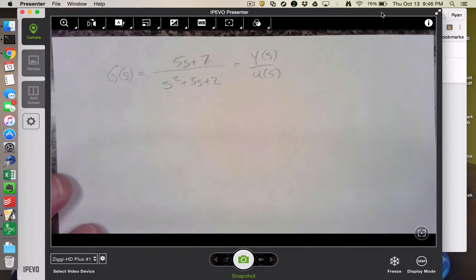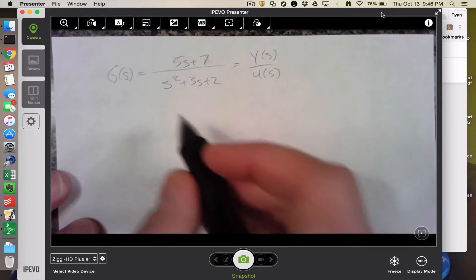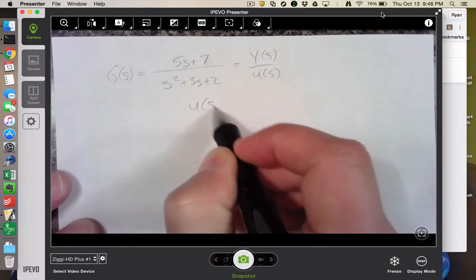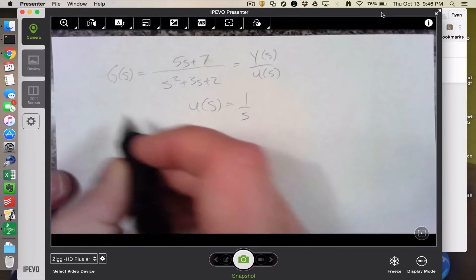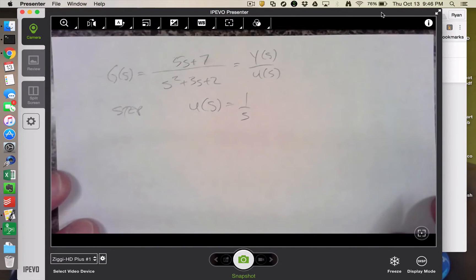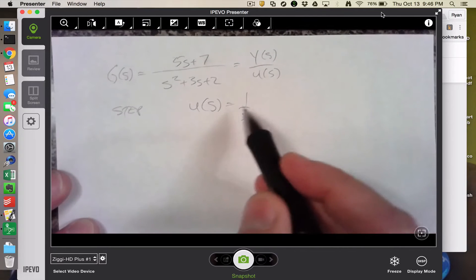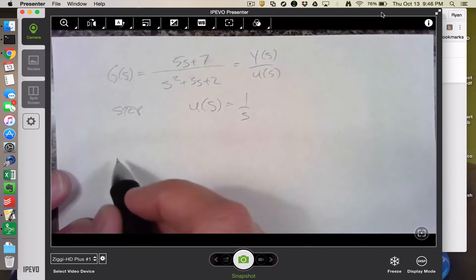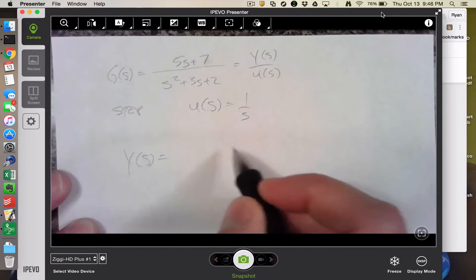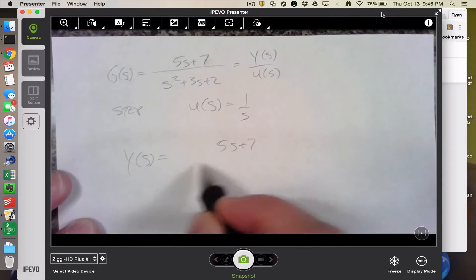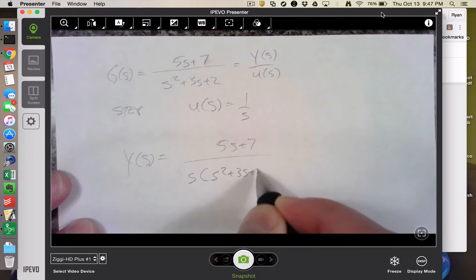My suggestion is that you kind of arbitrarily make up transfer functions and or differential equations, and then choose an input. I'm going to do a step response, so a step input to this transfer function. When I multiply that times u of s, I'm going to get that y of s is 5s plus 7 over s times s squared plus 3s plus 2.